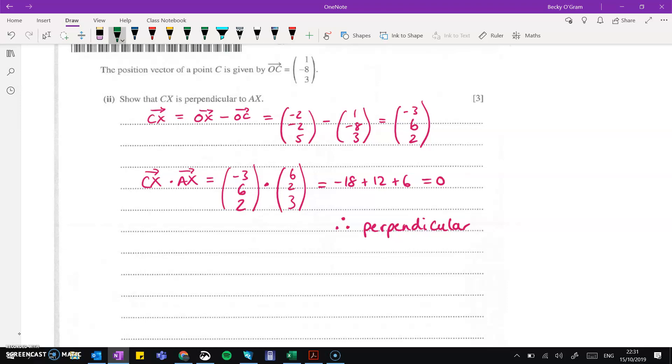We do that by doing the scalar product. The scalar product comes out to 0, and when the scalar product is 0, we know that the vectors are perpendicular.